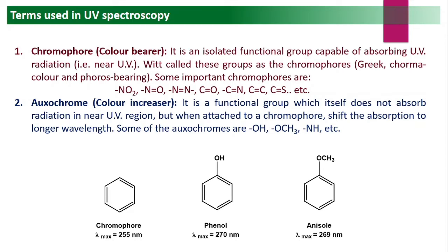Similarly, if OCH3 is substituted on benzene, anisole is formed and it absorbs at around 260 nm. That is why OH and OCH3 groups are called auxochromes — independently they do not absorb in the near UV, but when attached to a chromophore they increase the wavelength of absorption, hence called 'color increasers.'